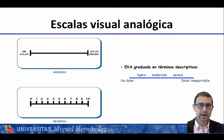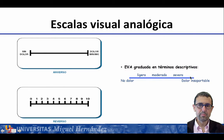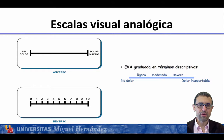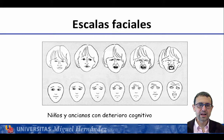Las escalas que empleamos generalmente son: una escala analógica del 0 al 10, donde el paciente indica desde ningún dolor hasta máximo dolor; las escalas EVA en 4 o 5 cortes —sin dolor, dolor ligero, moderado, grave o totalmente insoportable—. Le preguntamos al paciente cuál es la intensidad del dolor entre 0 y 10 y lo medimos. También usamos las escalas faciales, empleadas muchas veces en niños o ancianos, para valorar si se encuentra bien o tiene mucho dolor.